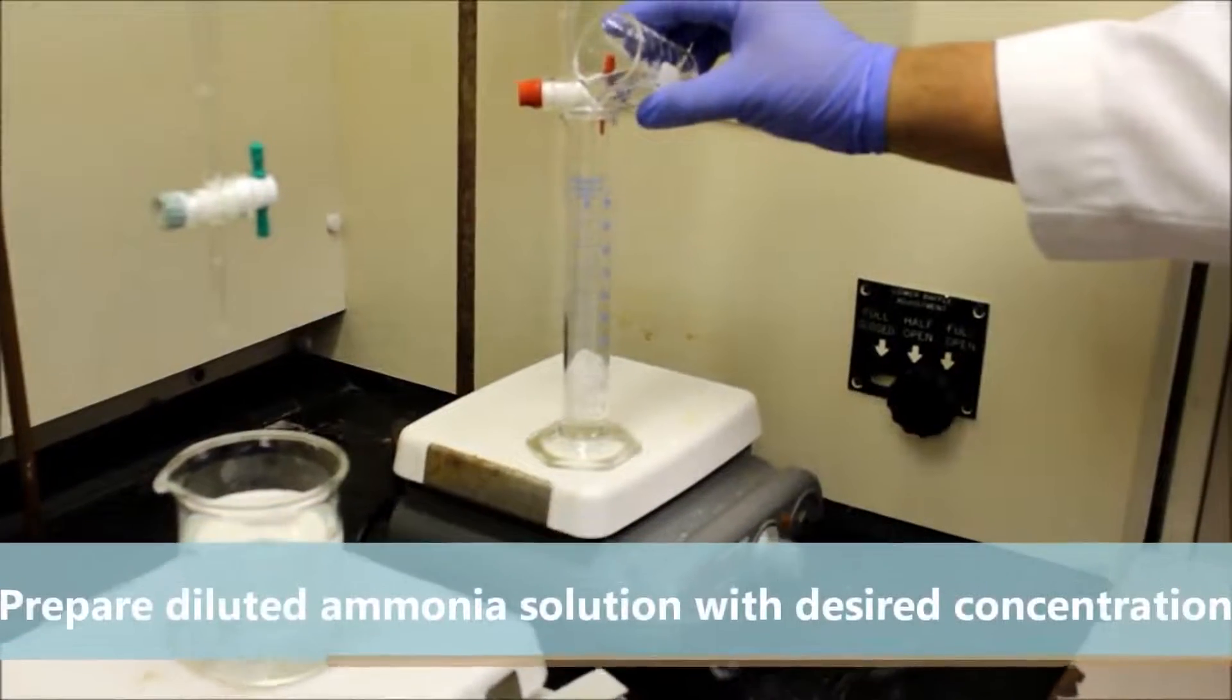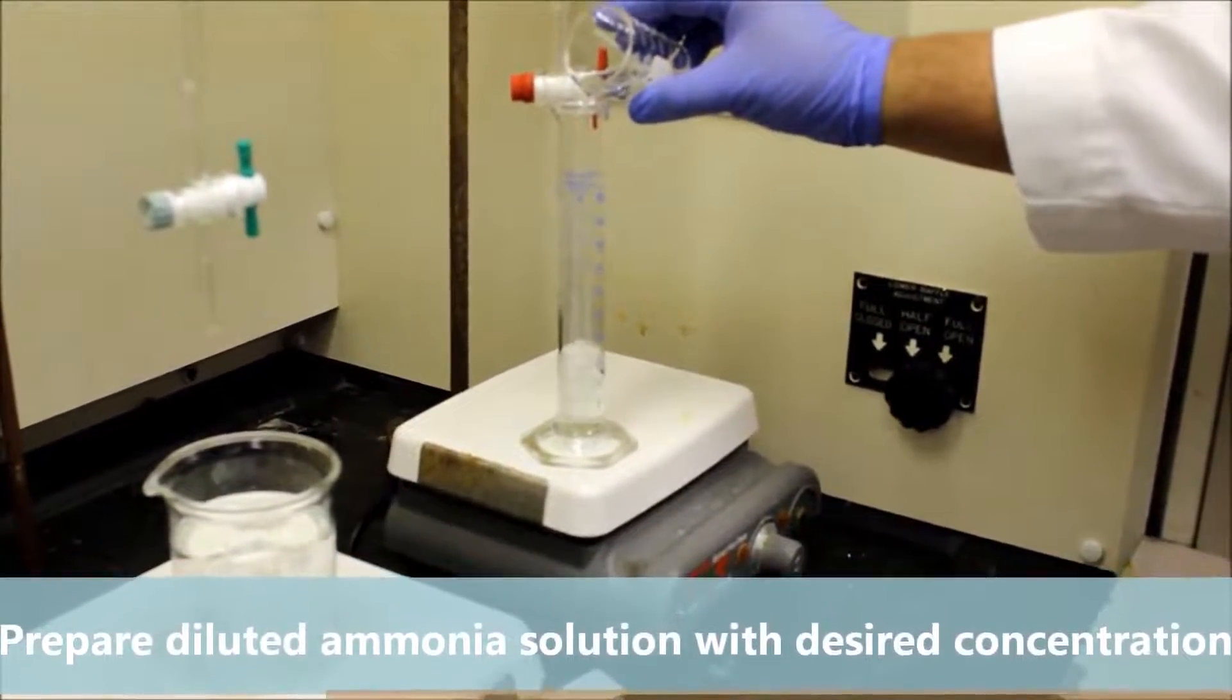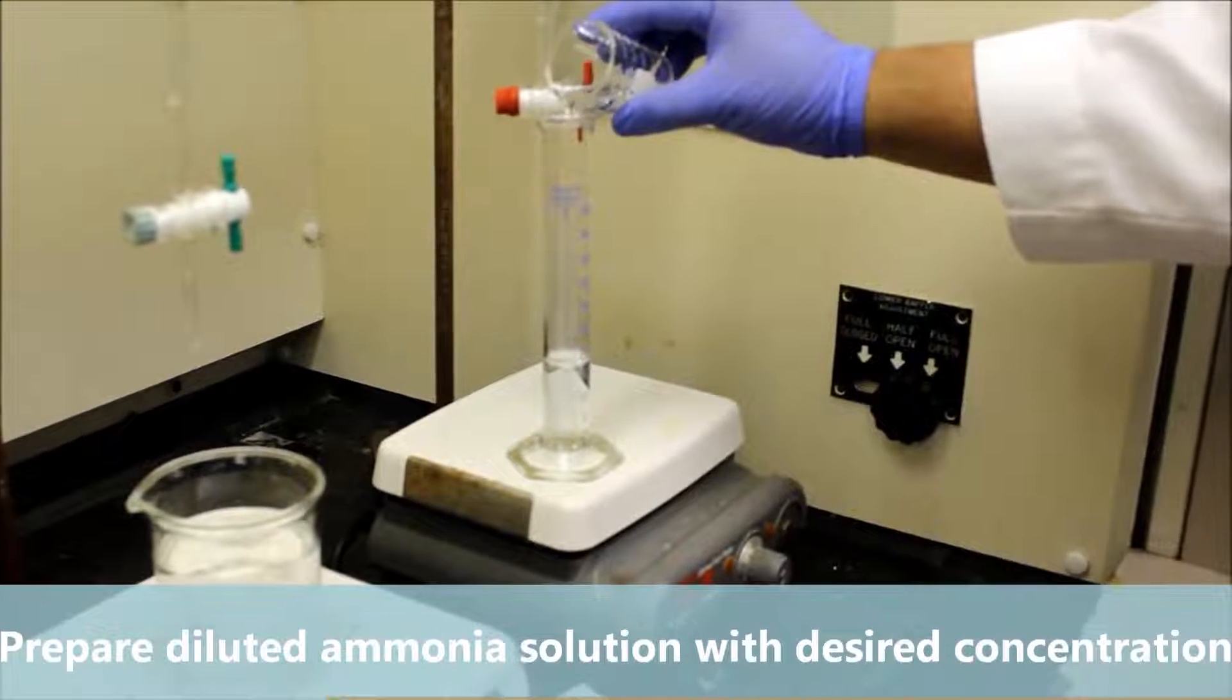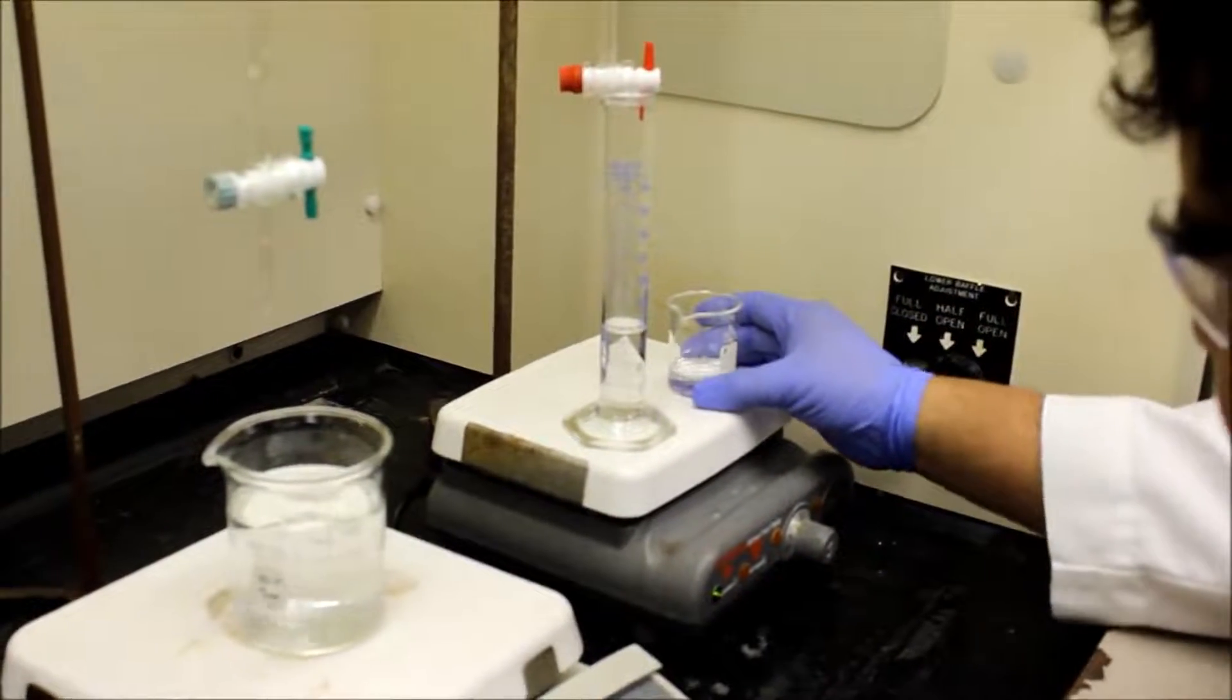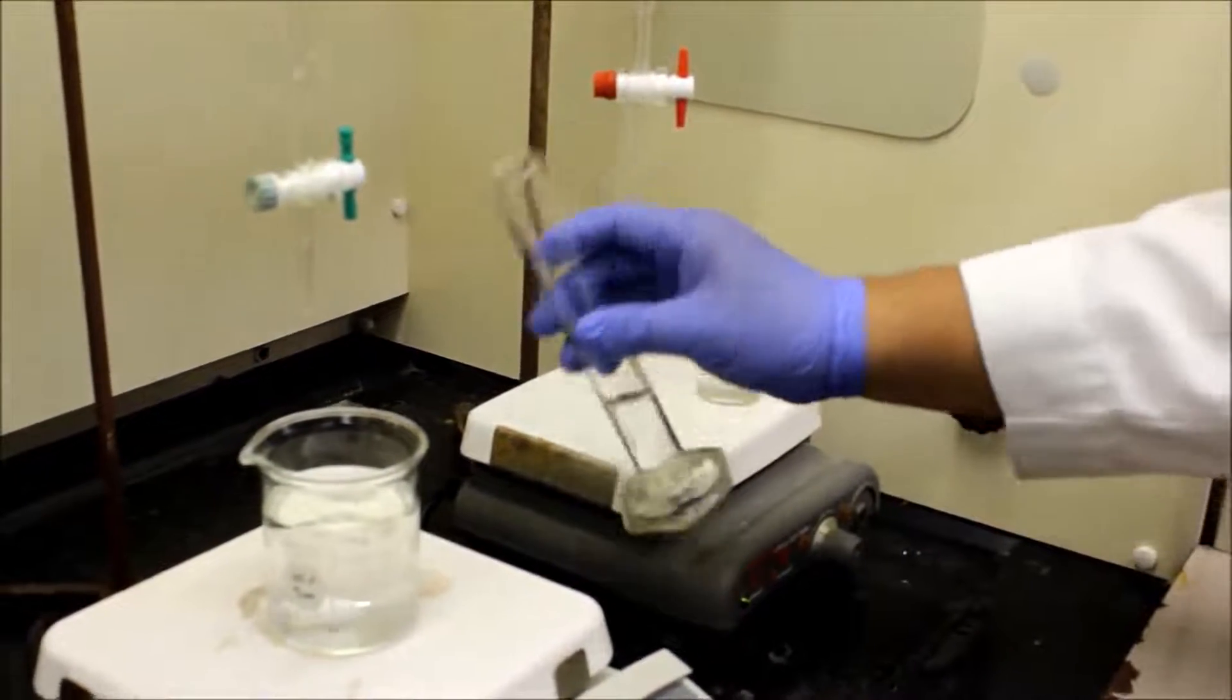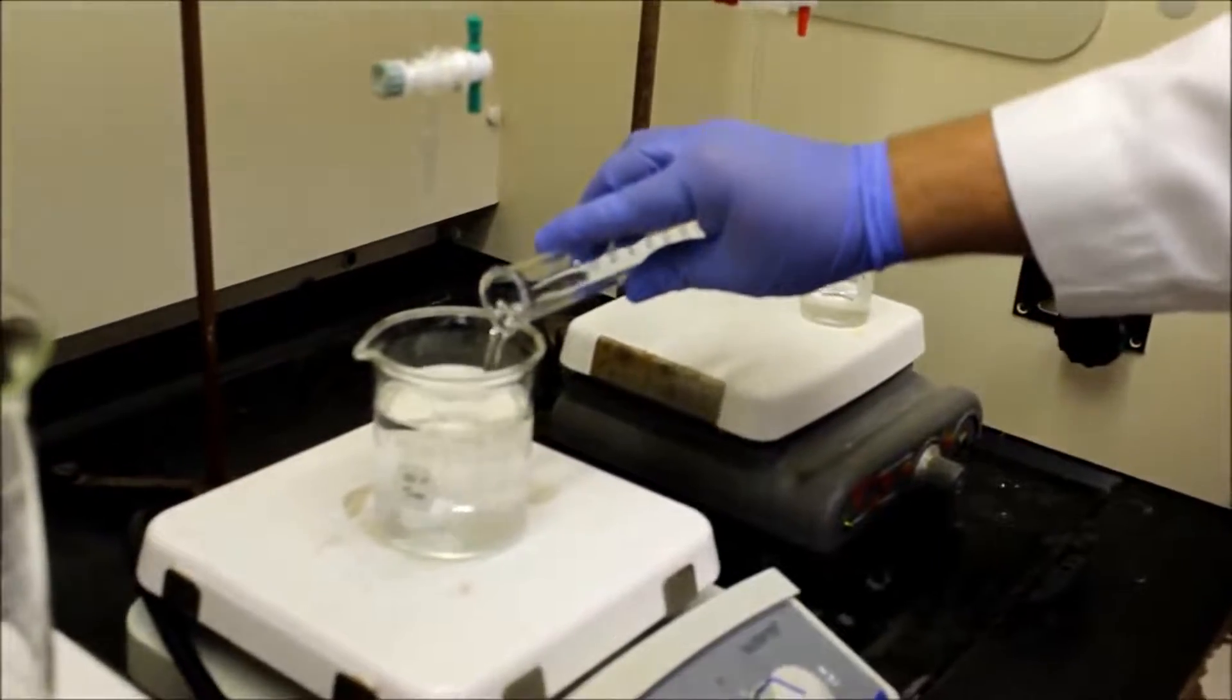Prepare different concentrations of the ammonia solution. For example, add 20 milliliters of ammonia hydroxide 30% to 180 milliliters of distilled water in a separate beaker to make a concentration of 3%.